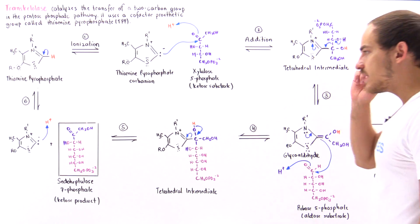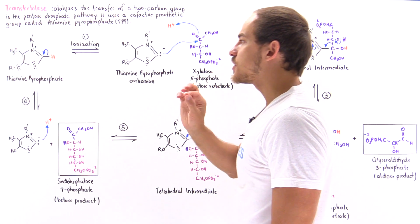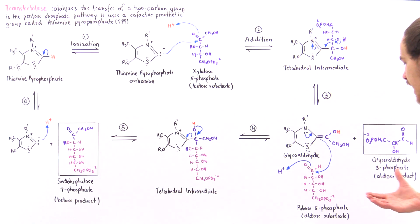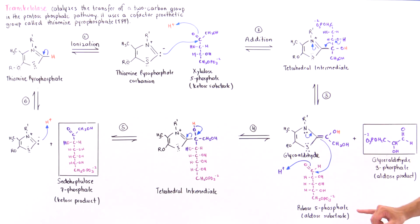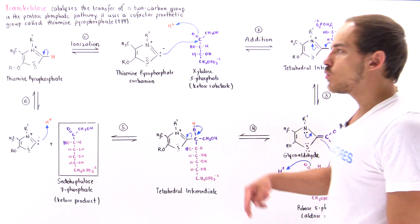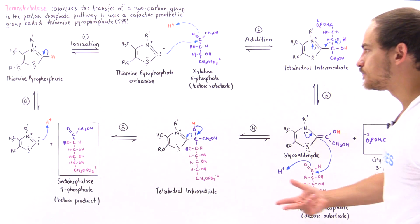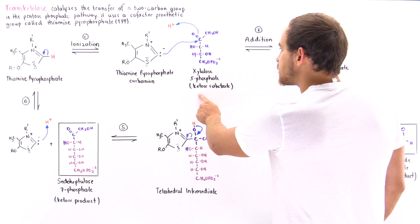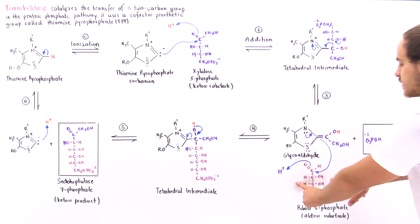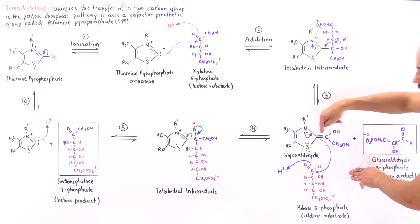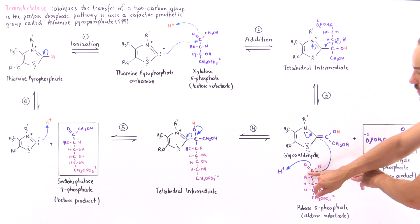In the next step, the second substrate molecule comes in — in this case, ribose-5-phosphate, an aldose substrate. We have two substrate molecules and two product molecules formed. This pi bond acts as a nucleophile and attacks the electrophilic carbon of the activated glycoaldehyde.